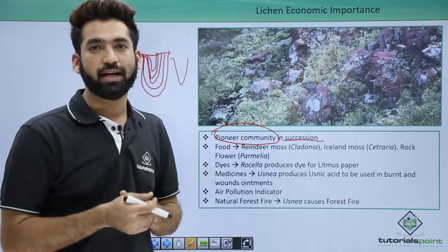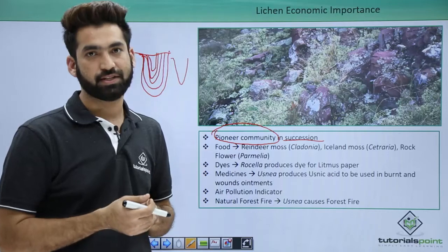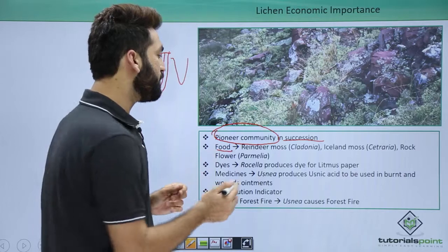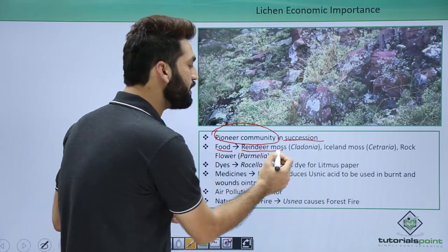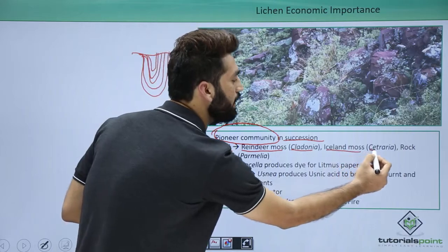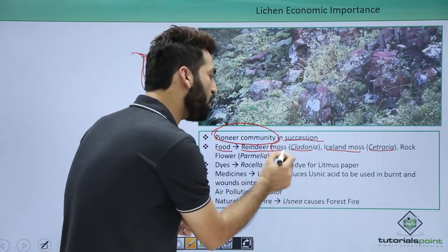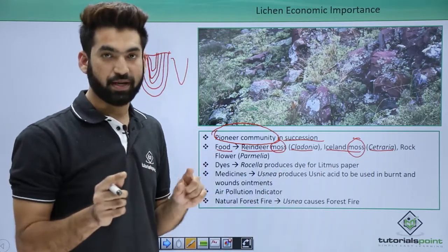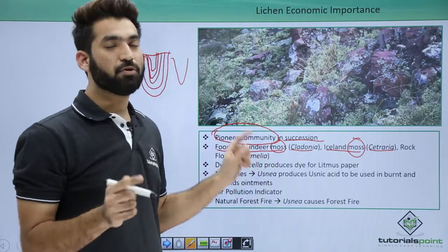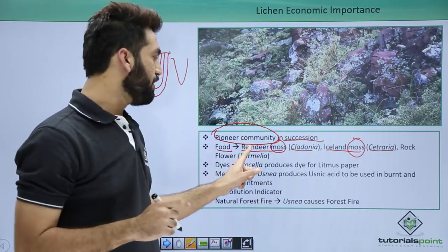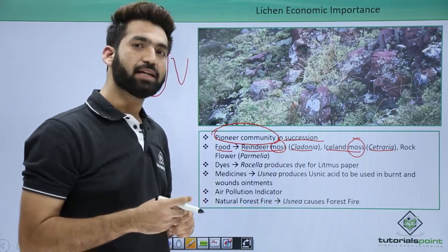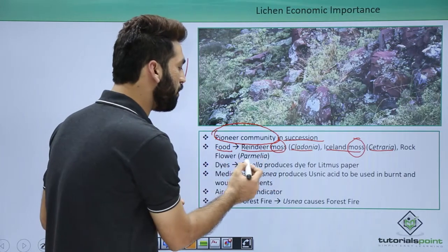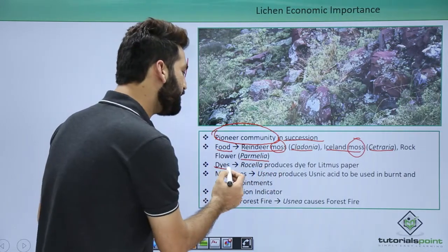Lichen is the first to establish over barren areas and start up succession. In many parts of the world, lichens are used as food. Reindeer moss (Cladonia) and Iceland moss (Cetraria) are examples — note that despite being called 'moss,' they are lichens, not bryophytes. Another edible lichen is rock tripe or Parmelia.